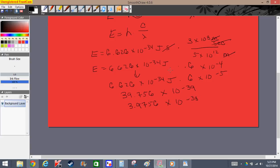Since we have the unit joules here, we're going to represent this in terms of joules. And now we have it. The energy of this photon of light is going to equal 3.9756 times 10 to the negative 38 joules.